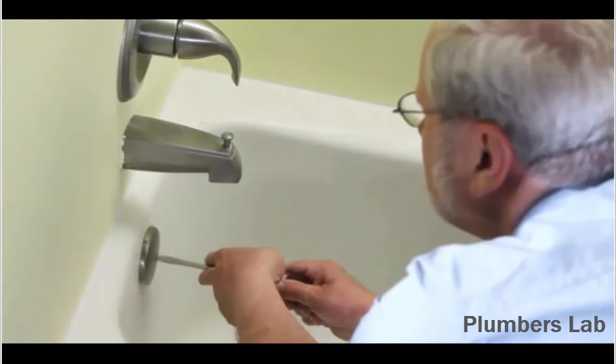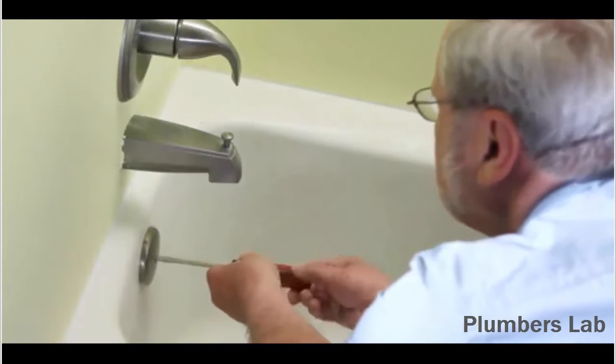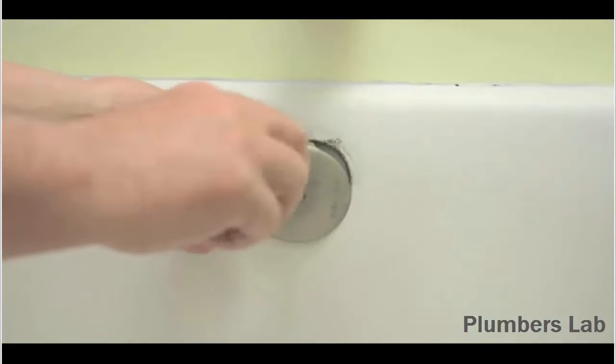Now use the screwdriver to disconnect and remove the waste and overflow valve cover on the side of the tub.